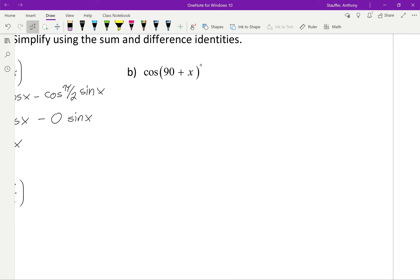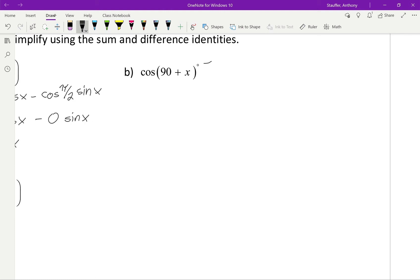Cos 90 plus x, so you see that little discrete symbol right there, so that just means that we're working with degrees, not with radians. But, again, this gives me cos 90 cos x, all minus sin 90 sin x. And, that ends up being 0 multiplied by cos x minus 1 multiplied by sin x, which would end up giving me negative sin x.